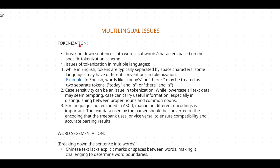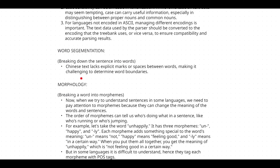The next topic is word segmentation. Word segmentation means breaking a given sentence into words that carry meaning. The first issue: Chinese text lacks explicit markers or spaces between words, making it challenging to determine word boundaries. In English, each word is separated by a space, but in Chinese there are no spaces between words, making it difficult to find word boundaries.